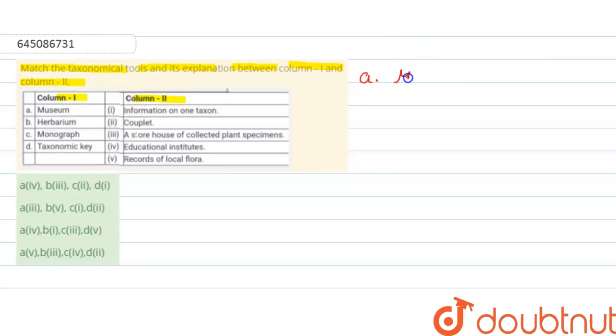In column 1, option A is museum. So what is a museum? That is a place where both animals and plants are preserved for future study.